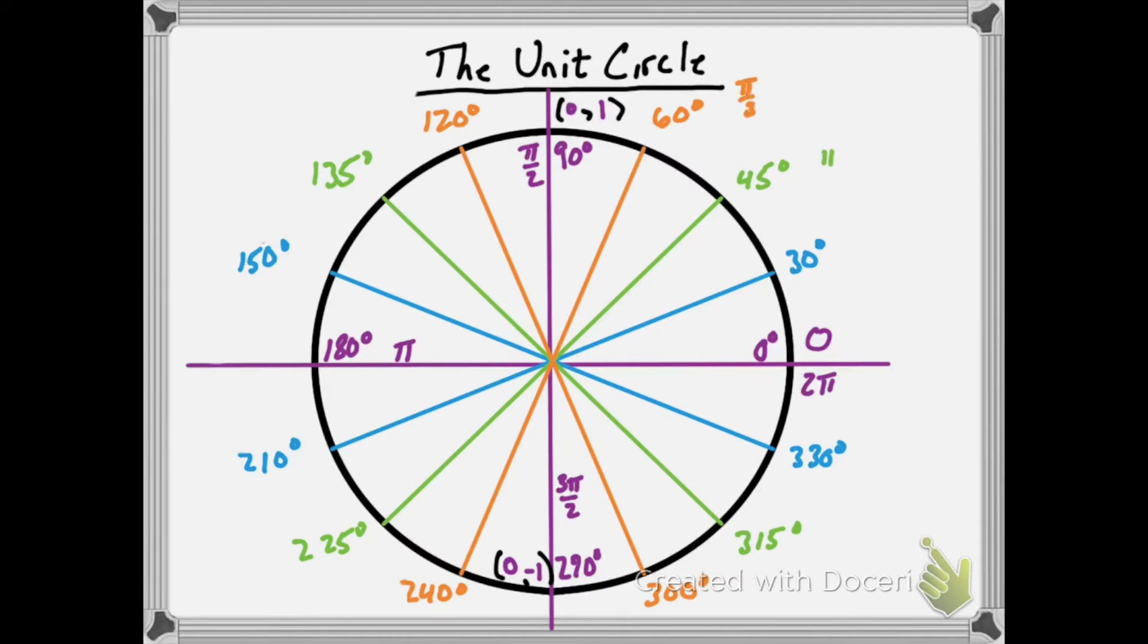From there, if I know my first quadrant, 60 degrees to be pi over 3, 45 degrees to be pi over 4, and 30 degrees to be pi over 6, to find the remaining radians, I think of pi and 2 pi in terms of those denominators, 3, 4, and 6.